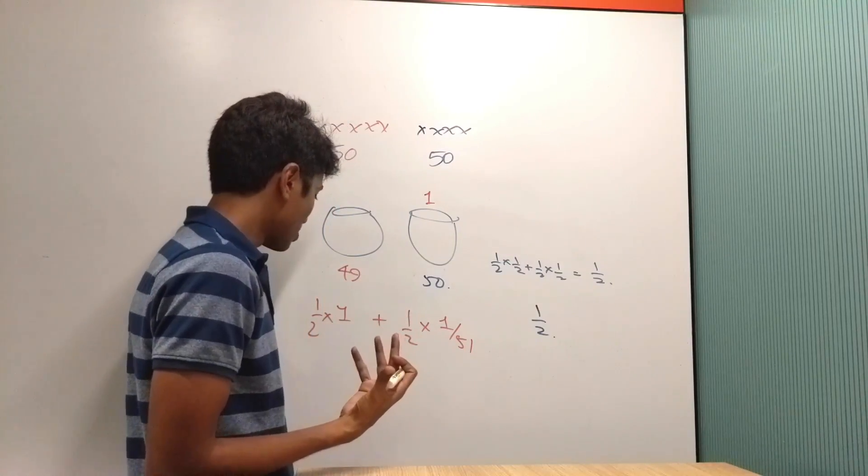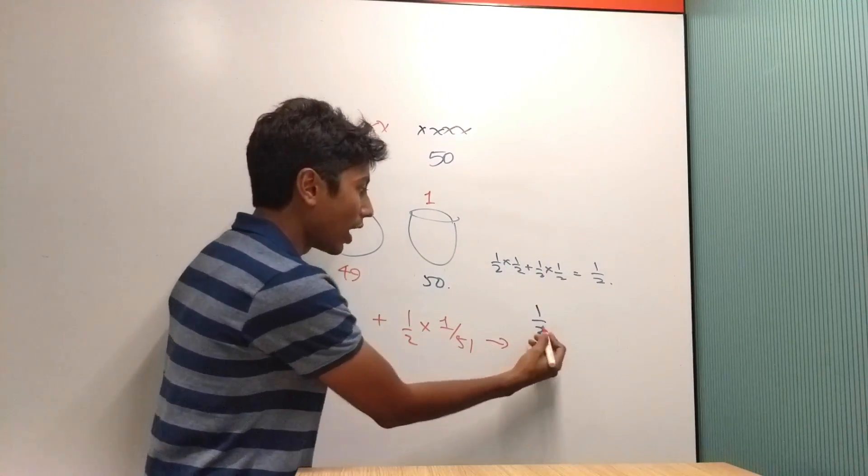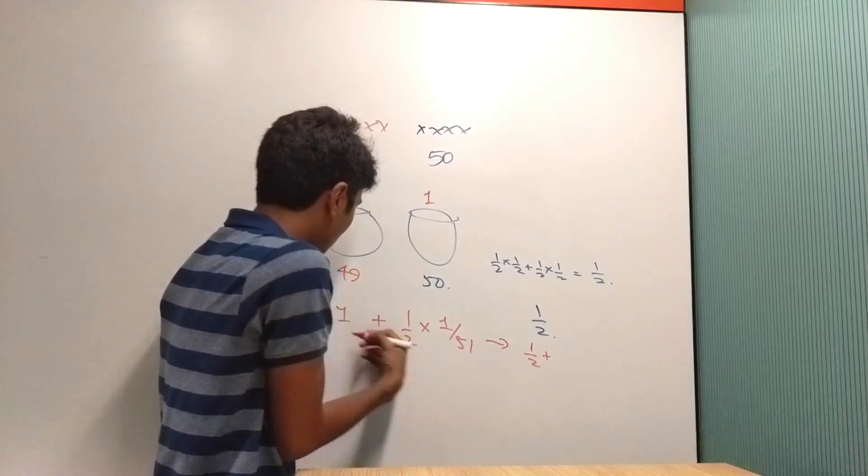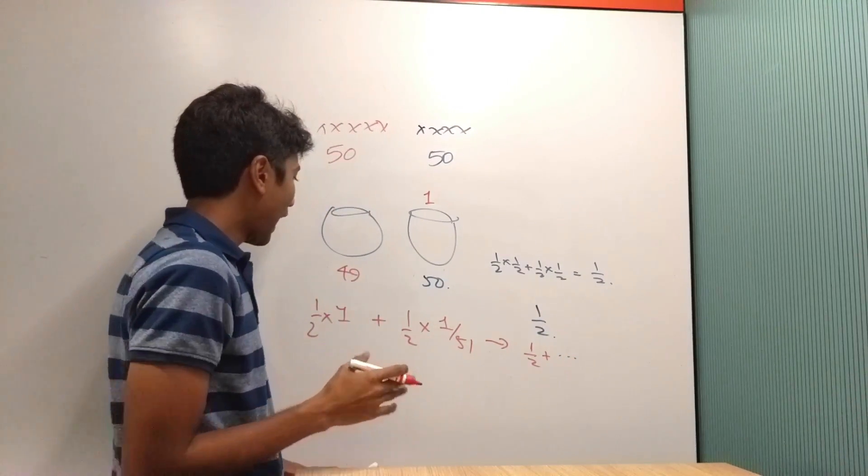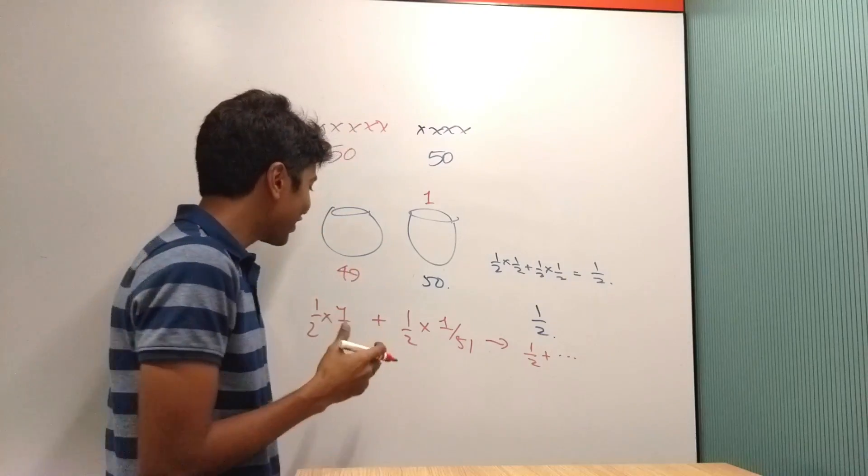Yeah, that's the probability of drawing a red chit. So it's already gone above 50%. It's half plus something. And I think it's pretty obvious now. What I need to do is...